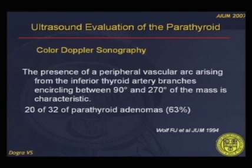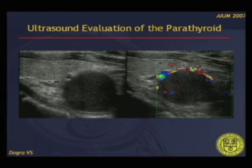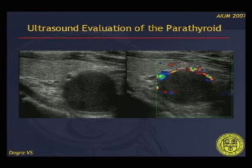In a study by Wolf, Hall, published in JUM in 1994, they described the presence of an arc between 90 and 270 degrees around the parathyroid mass, seen in 20 of 32 patients. This is an example demonstrating the peripheral arc — the first image is a grayscale of a hypoechoic mass confirmed as parathyroid adenoma, with color flow Doppler demonstrating the arc sign.